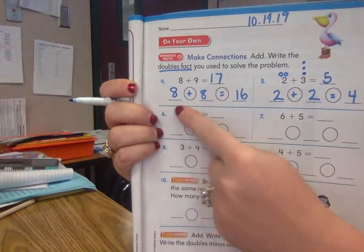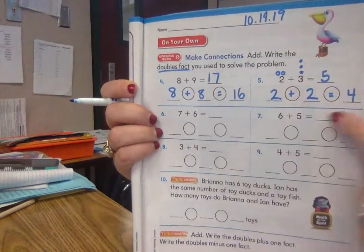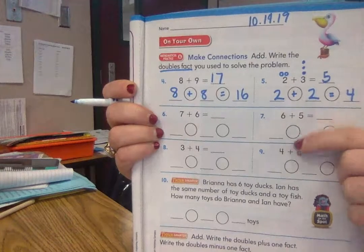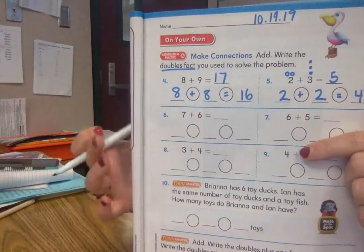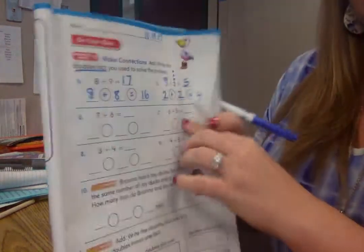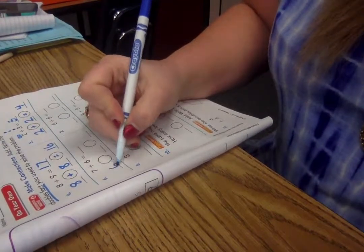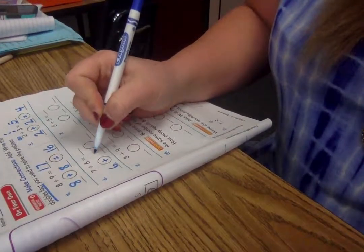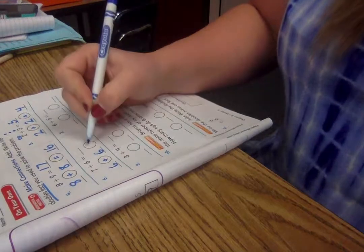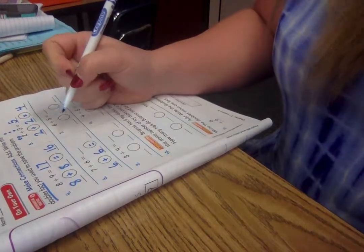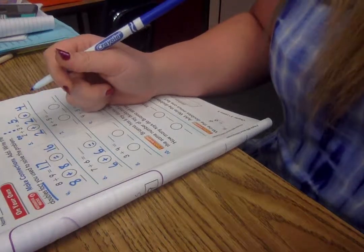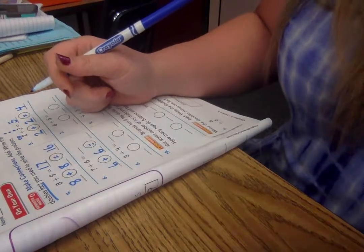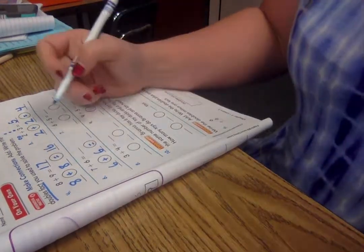So a lot of you can solve it by adding the doubles and then adding 1 more or taking 1 away. So 7 plus 6. Let's say you chose 6 plus 6. Let's write that down. What's the doubles fact answer? 12.